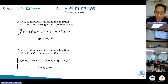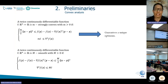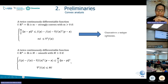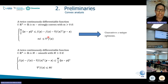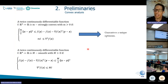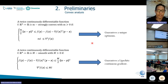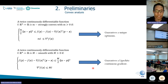Two important concepts as well. We say that a twice-differentiable function is strongly convex if it satisfies these two conditions. If the function is strongly convex, we can guarantee that there is a unique optimal. And if this twice-differentiable function is smooth, it satisfies these two conditions, and we can guarantee that the gradient is Lipschitz continuous.